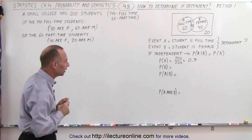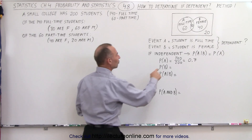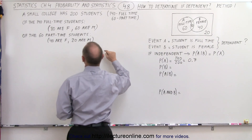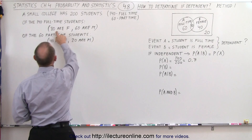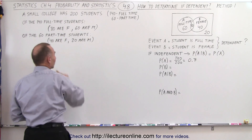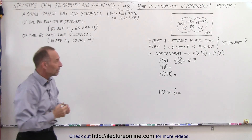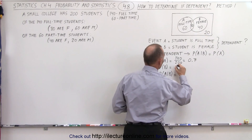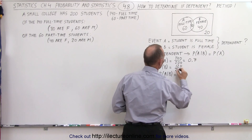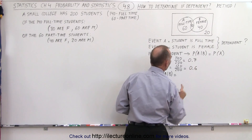What about the probability of B? Event B is that the student is female. There's a total of 80 females that are full-time and 40 females that are part-time, so there's a total of 120 females out of 200 students. So that's 120 out of 200, which is 0.6.